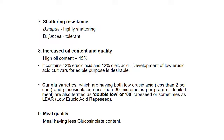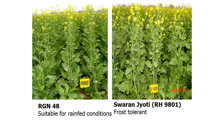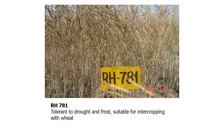For shattering resistance in Brassica: napus is highly shattering and juncea is tolerant. For increased oil content up to 45%, canola varieties that have both low erucic acid (less than 2%) and glucosinolate less than 30 micromoles per gram of defatted meal are termed as 00 rapeseed or LER (low erucic acid rapeseed). RGN48 is suitable for rain-fed conditions. Swarna Jyoti is for frost tolerance. RH781 is tolerant to drought and frost and suitable for intercropping with wheat.